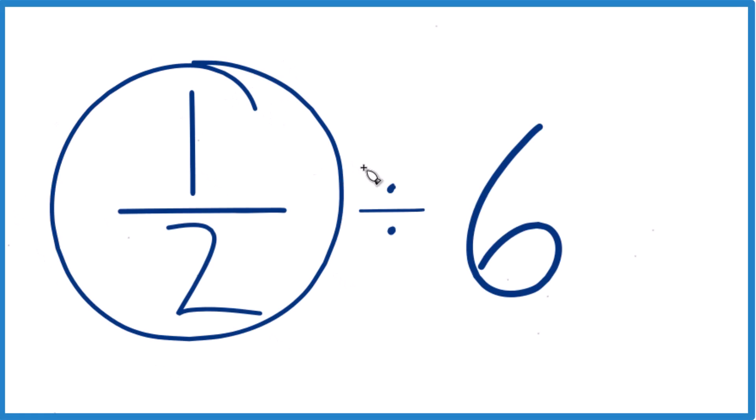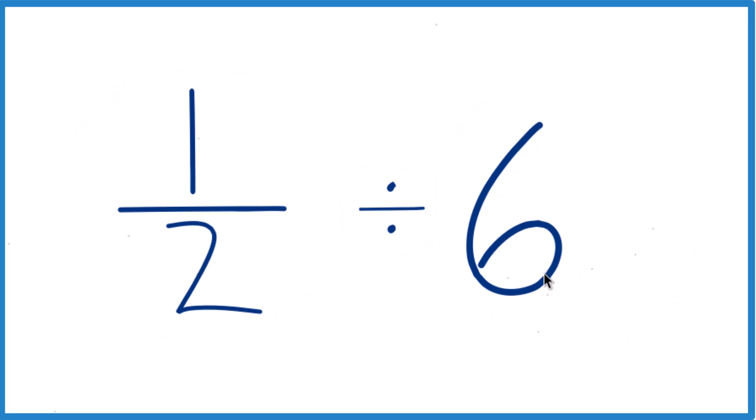All right. Let's figure out one-half divided by six. So the way to do this, first off, let's take six and make it six over one.